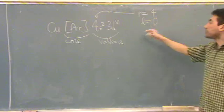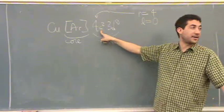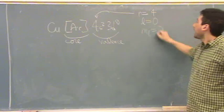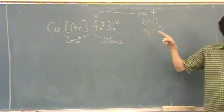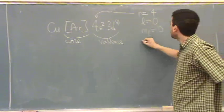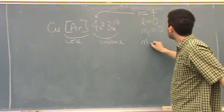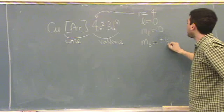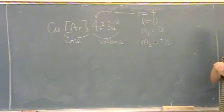It can't equal 3 here because S specifies L. M sub L? Zero. Has to be zero because L is zero. And then, M sub S. Plus or minus half depending if it's an up spin or a down spin.